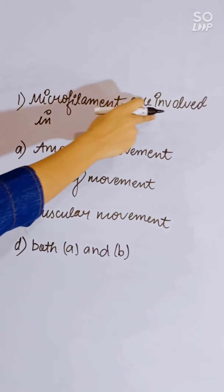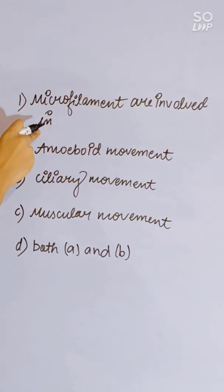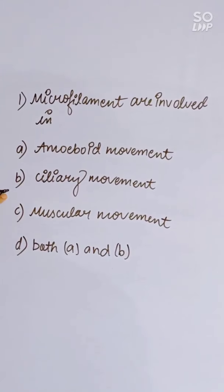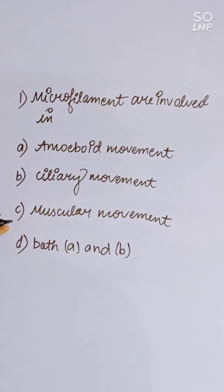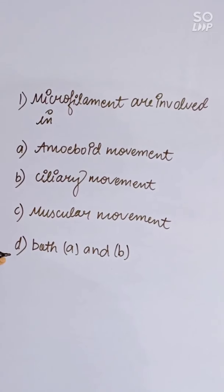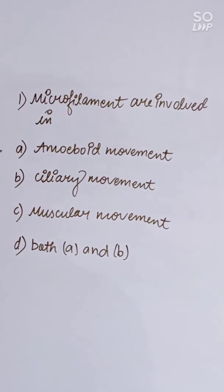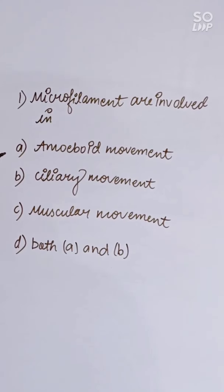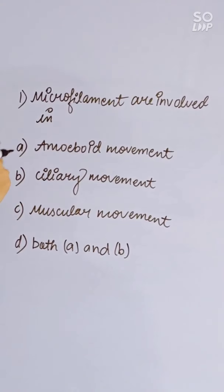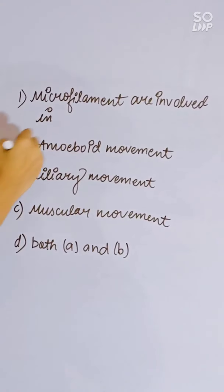Microfilaments are involved in: amoeboid movement, ciliary movement, muscular movement, or both A and B. Amoeboid movement is the type in which microfilaments are involved. Correct answer is A.